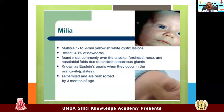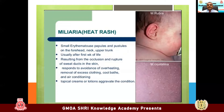Milia: multiple one to two millimeter yellow-white cystic lesions, affecting almost 40% of babies, most commonly over the cheeks, forehead, nose, and nasolabial folds due to blocked sebaceous glands. Known as Epstein pearls when they occur in the oral cavity. Self-limited and reabsorbed within one to two months — you don't have to do anything. Miliaria — heat rash: small erythematous papules and pustules on the forehead, neck, and upper trunk, usually after the first week of life, resulting from occlusion and rupture of sweat ducts. It is self-limiting. Avoid overheating, remove excessive clothing, and allow it to cool. Don't apply topical creams as they may worsen the condition.